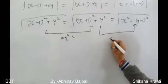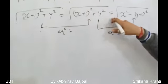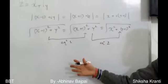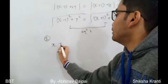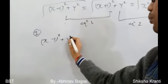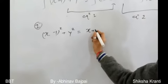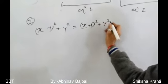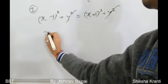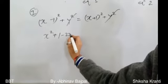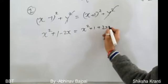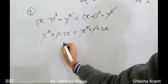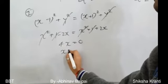Solving equation 1: (x-1)² + y² = (x+1)² + y². The y² terms cancel. Expanding the brackets gives x² + 1 - 2x = x² + 1 + 2x, so 4x = 0, which implies x = 0.